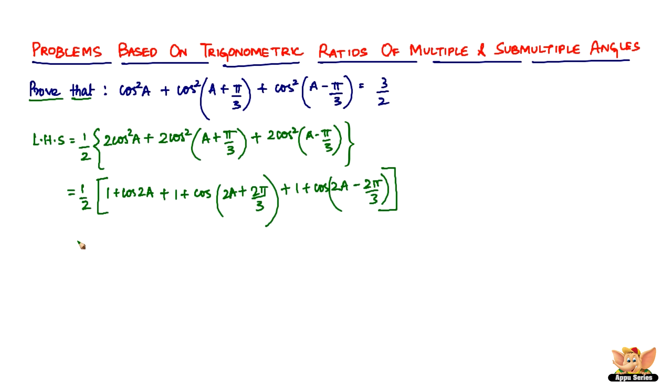Now let's add all the ones up: 1 + 1 + 1 = 3. So we get 1/2[3 + cos2a + cos(2a + 2π/3) + cos(2a - 2π/3)].